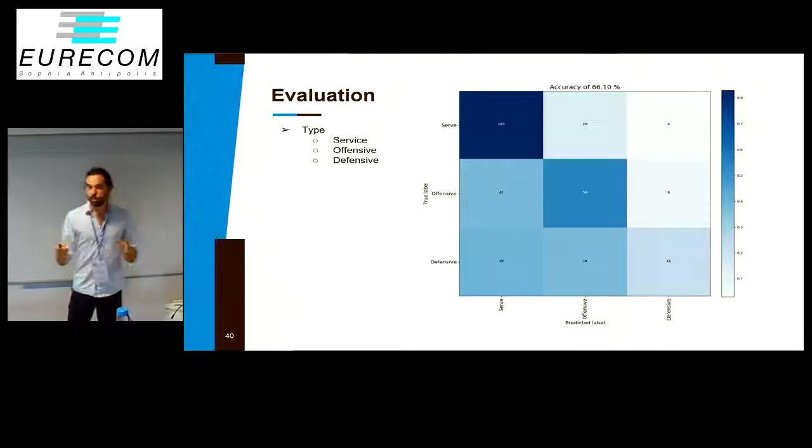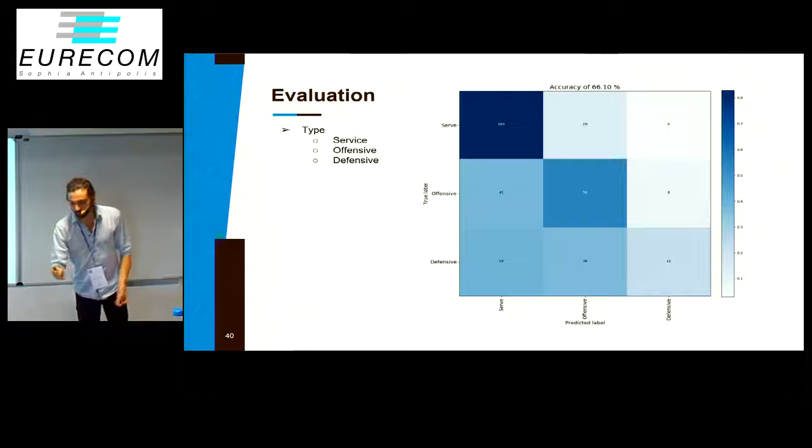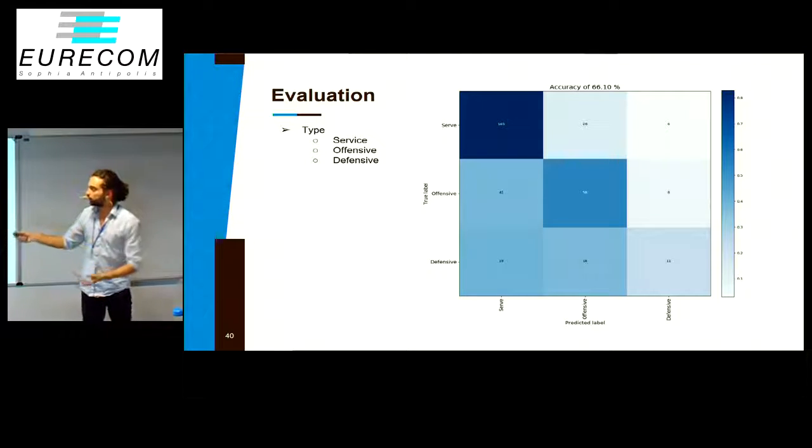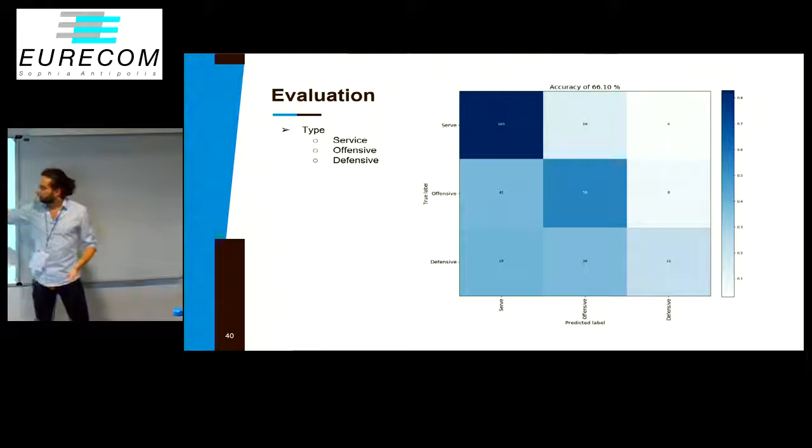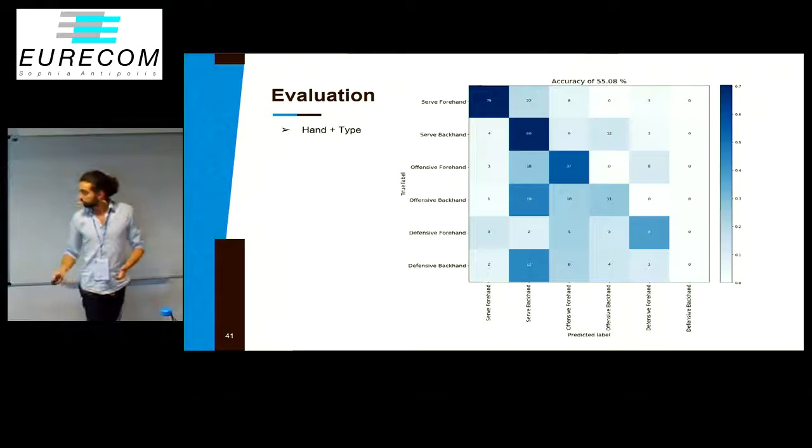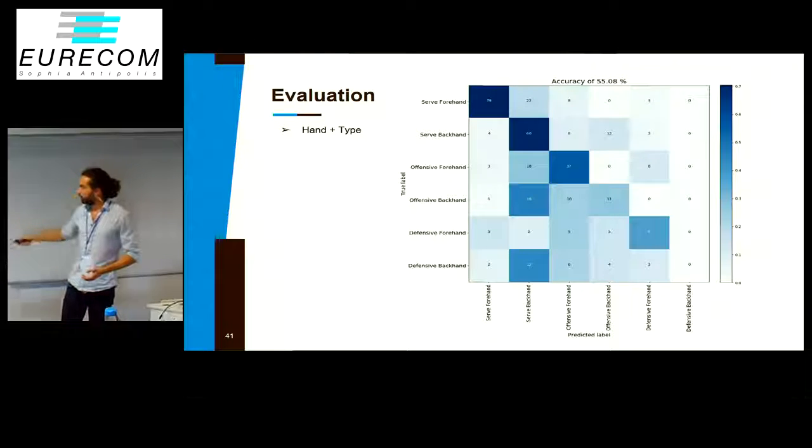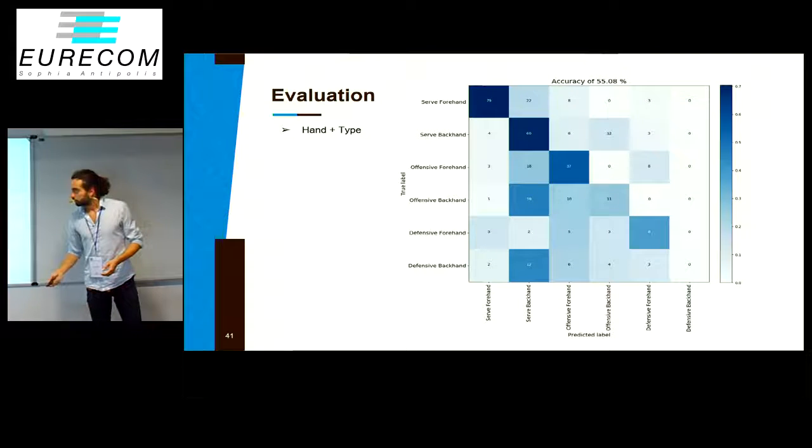We did the classification based on the middle of the annotation, meaning you don't see when the person releases the ball, meaning you see only the stroke, which is why we classify them as offensive or defensive and not services. When we do the combination of both, we achieved 55% overall.